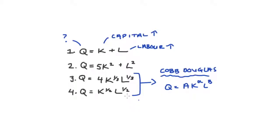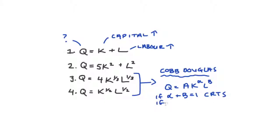The reason why it's important for returns to scale is that with Cobb-Douglas, we can just look at the value of the exponents and see really clearly what returns to scale the production function exhibits. In particular, if alpha plus beta equals one, then we have constant returns to scale. If alpha plus beta is greater than one, we have increasing returns to scale. Or if alpha plus beta is less than one, we have decreasing returns to scale. Okay, that's it — I hope it helped. Please like and subscribe and have fun studying.